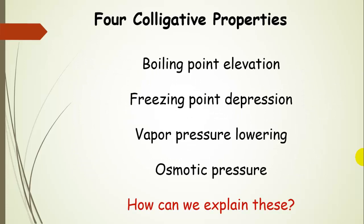There are four colligative properties. The first one is boiling point elevation — the boiling point of that solution is going to go up relative to the pure solvent. The freezing point is going to go down relative to the pure solvent. The vapor pressure will be lower than the vapor pressure of the pure solvent. And then osmotic pressure. We are going to talk about how these arise and how we can explain them.